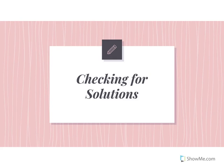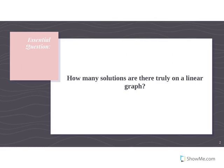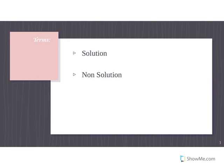Hi everyone. We're going to be checking for solutions today in our notes. Your essential question for this set of notes is: how many solutions are there truly on a linear graph? Our terms are solution and non-solution. A solution means that there are points on the graph. A non-solution means that the points are not on the graph. There are infinitely many solutions on these linear graphs.